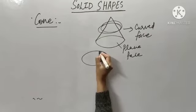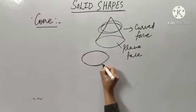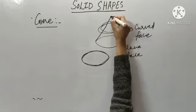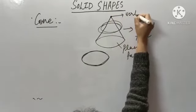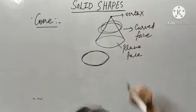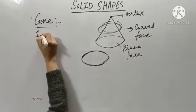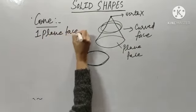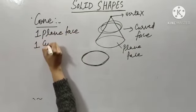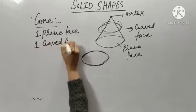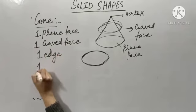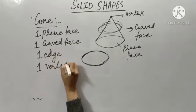This is my circular edge. And see — this is my vertex. So, cone has one plane face, one curved face, one edge, and one vertex.